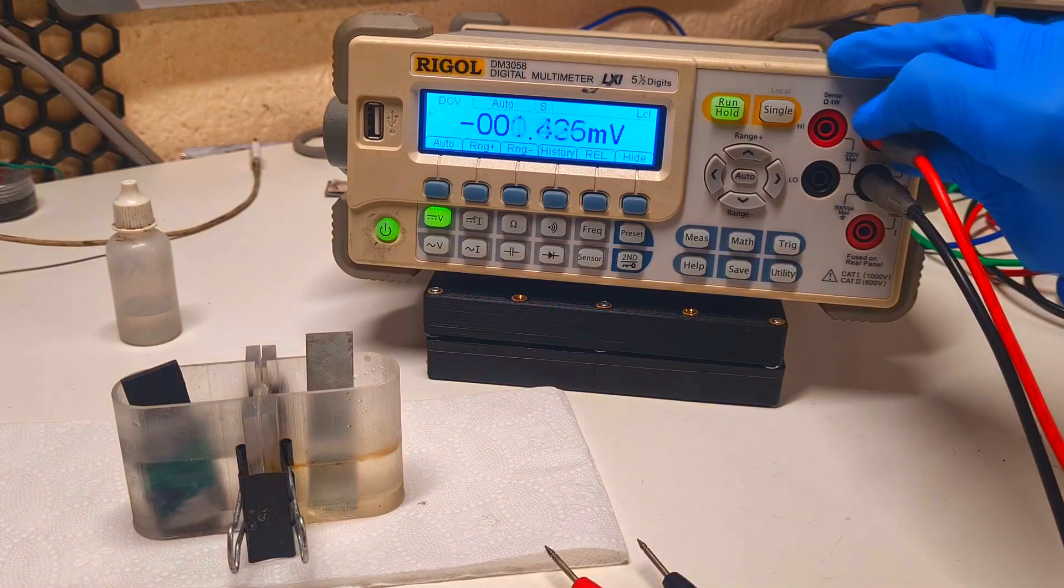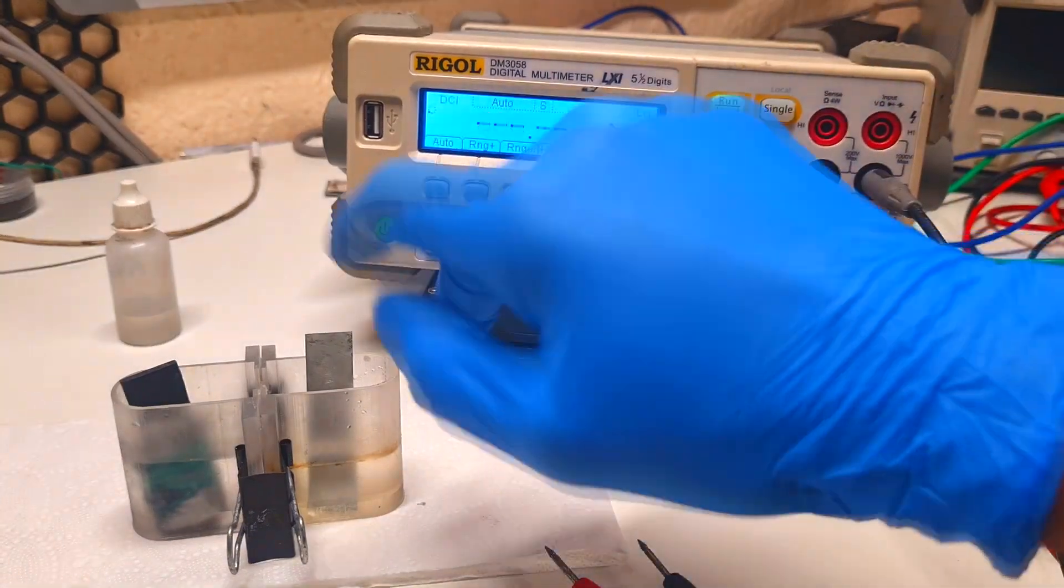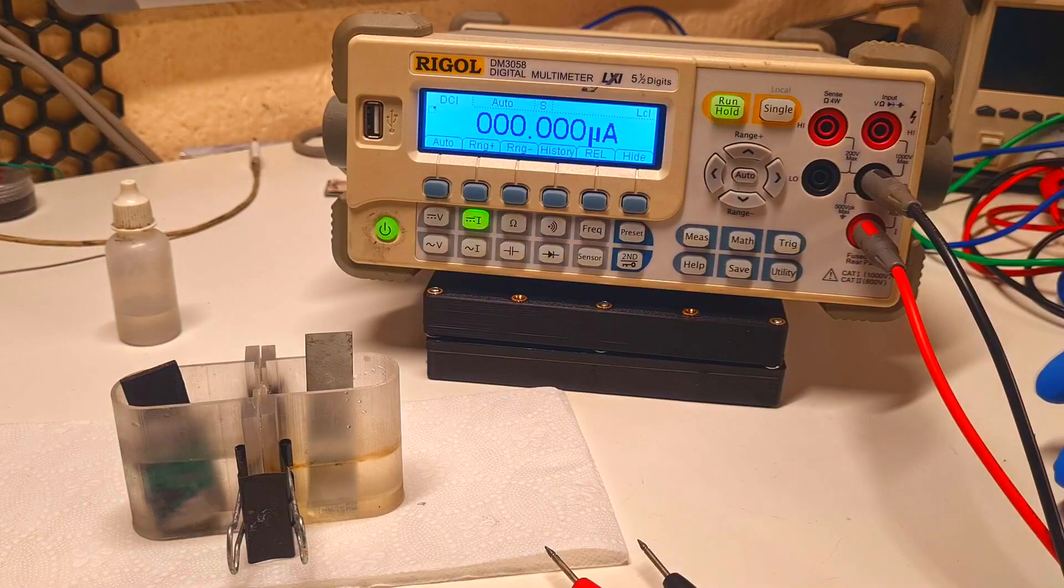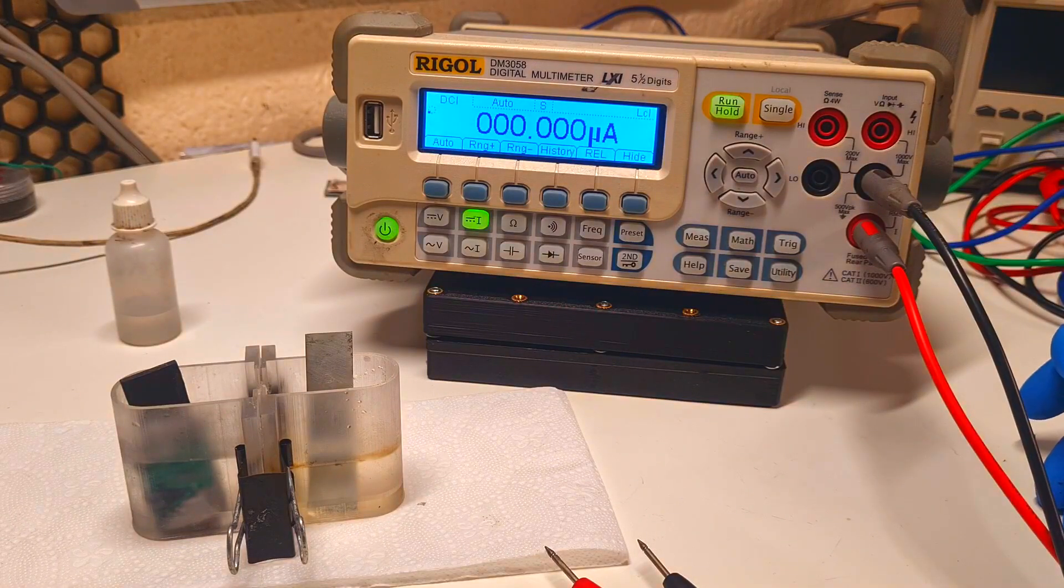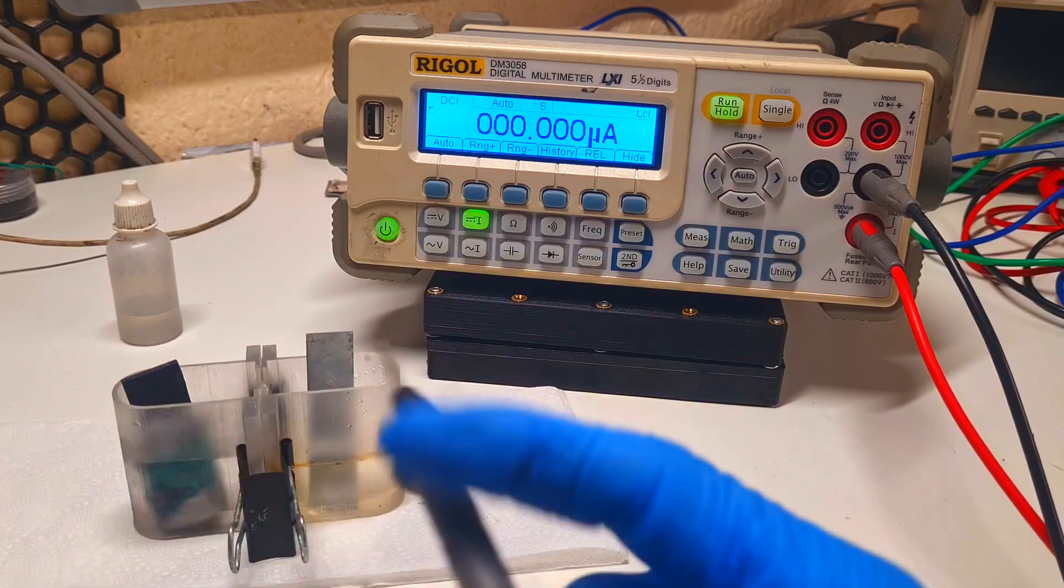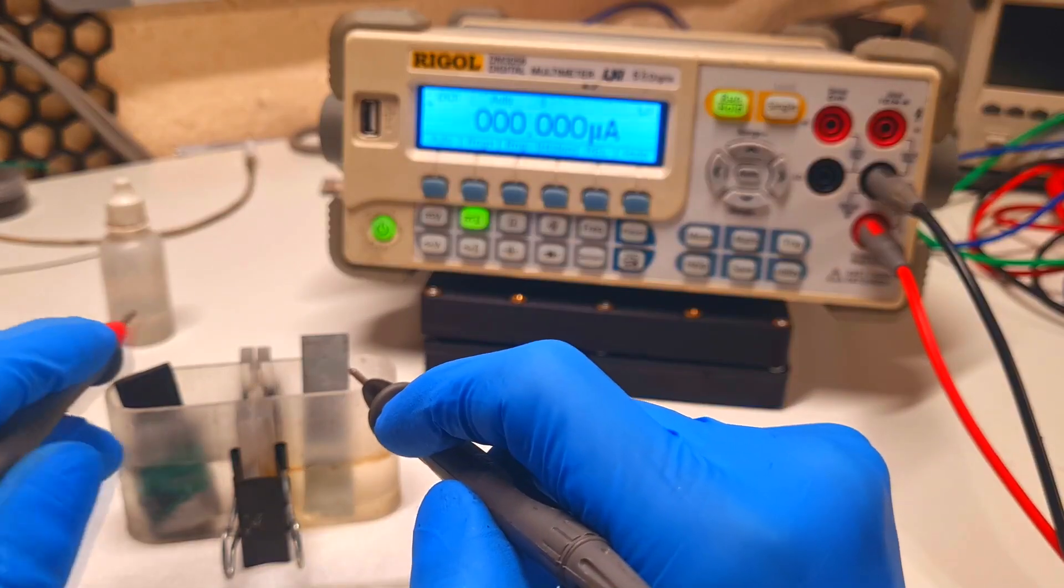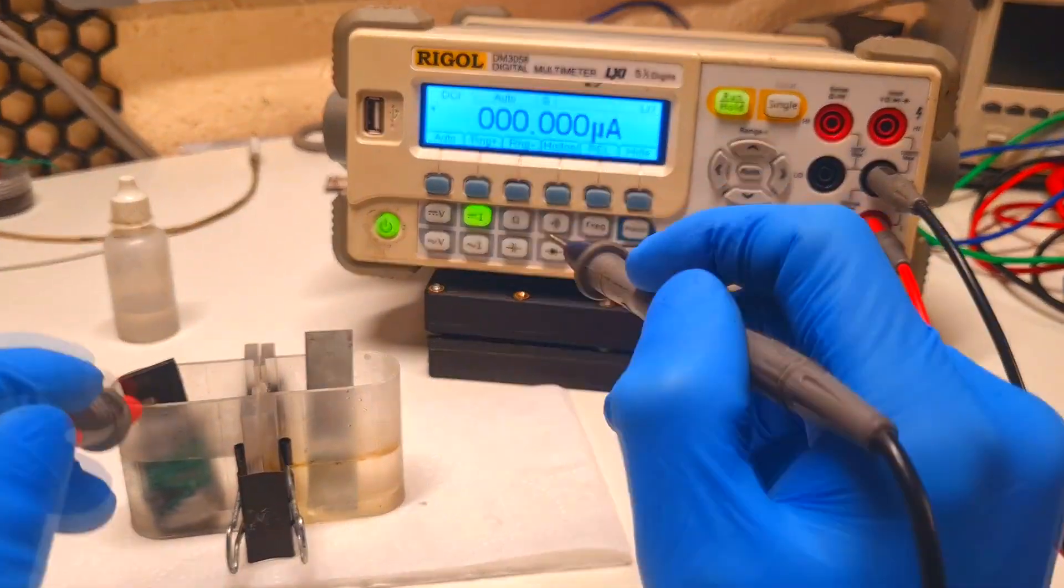I also can test the current of the cell. This cell with one mole of sodium hydroxide has a little bit slower current than that cell which uses two mole of potassium hydroxide electrolyte on the negative side.